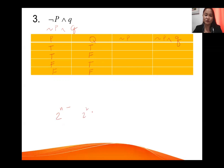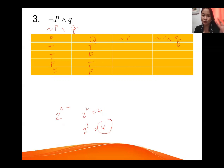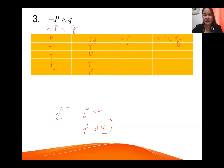If there are three statements p, q, and r, the formula is 2 to the power of n, where n is the number of statements. Here we only have two statements, so 2 to the power of 2 equals four rows. For negation of p: false, false, true, true. Then we proceed to the last column.